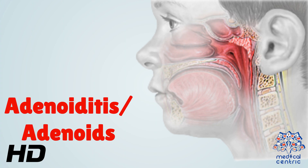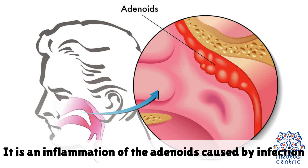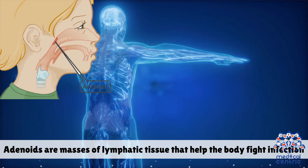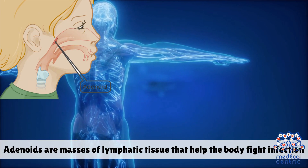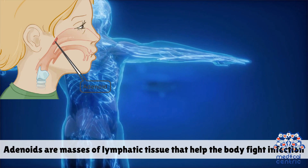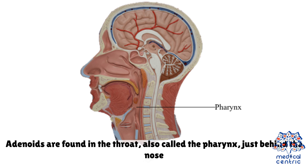Today's topic is adenoiditis — adenoids. It is an inflammation of the adenoids caused by infection. Adenoids are masses of lymphatic tissue that help the body fight infection. Adenoids are found in the throat, also called the pharynx, just behind the nose.